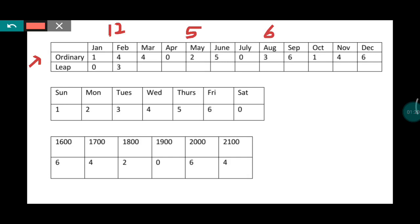This code is for ordinary year. If it is a leap year, then January and February codes change: January becomes 0 and February becomes 3. These are the codes for months. In the next table you can see the codes for days: Sunday code is 1, Monday 2, Tuesday 3, Wednesday 4, Thursday 5, Friday 6, and Saturday 0.